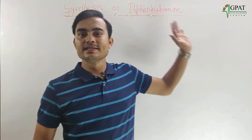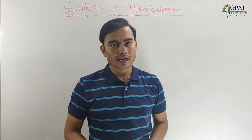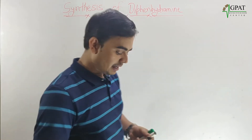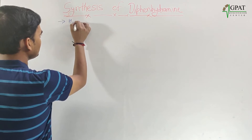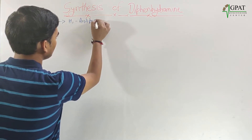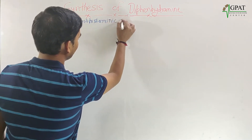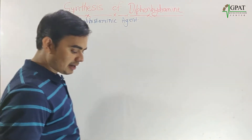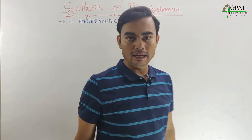Today we are going to discuss the synthesis of diphenhydramine. Diphenhydramine is an H1 antihistaminic agent. By the theoretical classification, this is an aminoalkyl ether derivative.